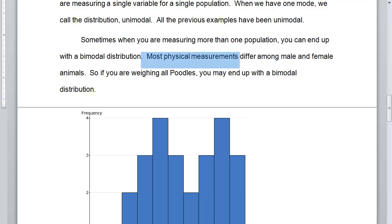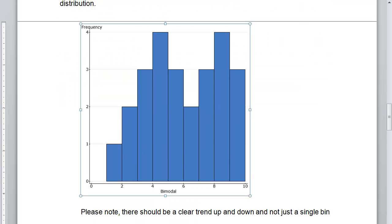An example would be most physical measurements differ among male and female animals. So if you're weighing all poodles, you may end up with a bimodal distribution because girl poodles are going to weigh less than boy poodles. And so you may end up with something that looks like this where we go up to this mode.